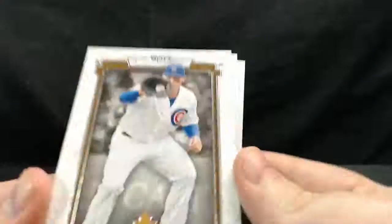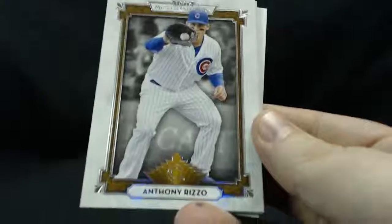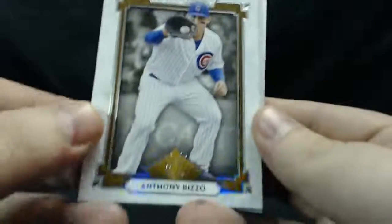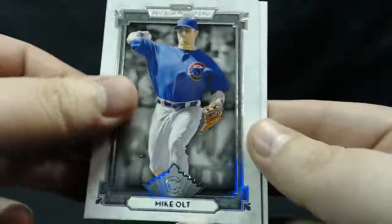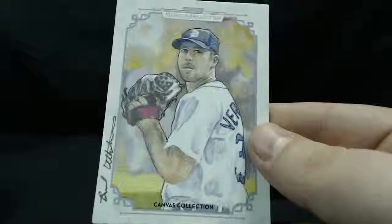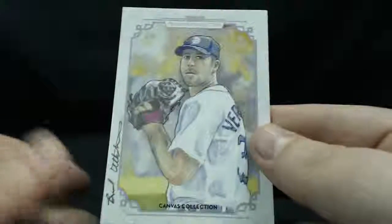All right, first up we have... Lower the camera a little bit. We have Anthony Rizzo, Copper Base Parallel. So, we have... Come on. Raphael Palmeiro. Mike Olt. We have a canvas collection of Justin Verlander.